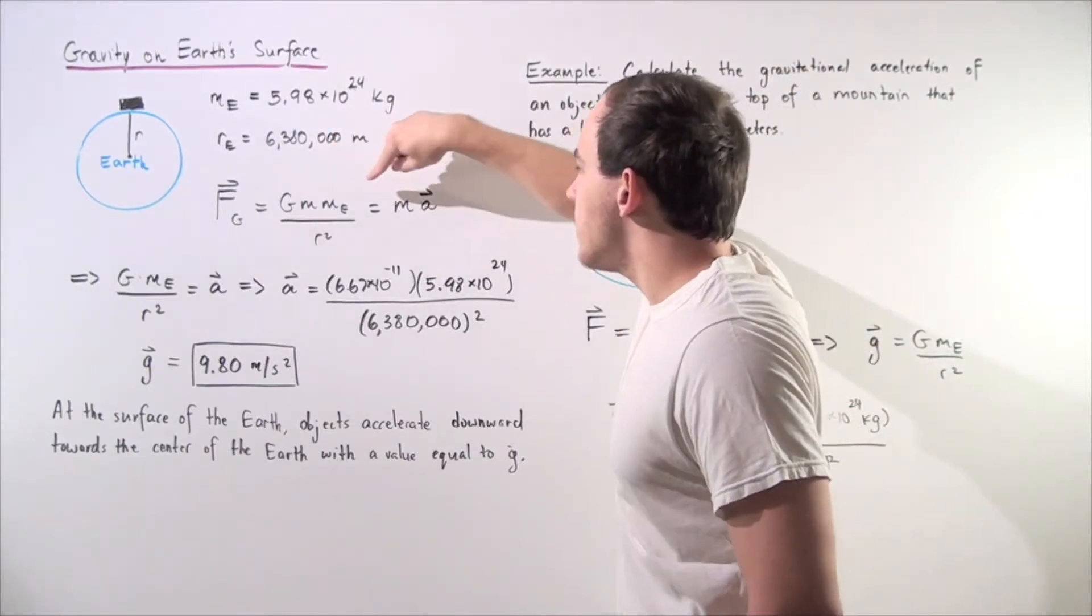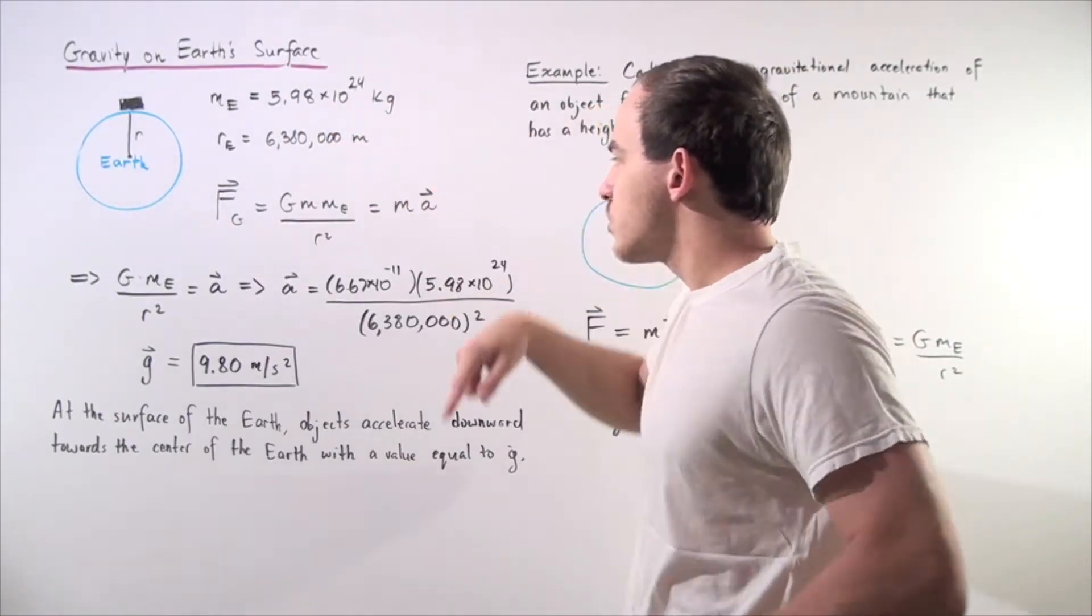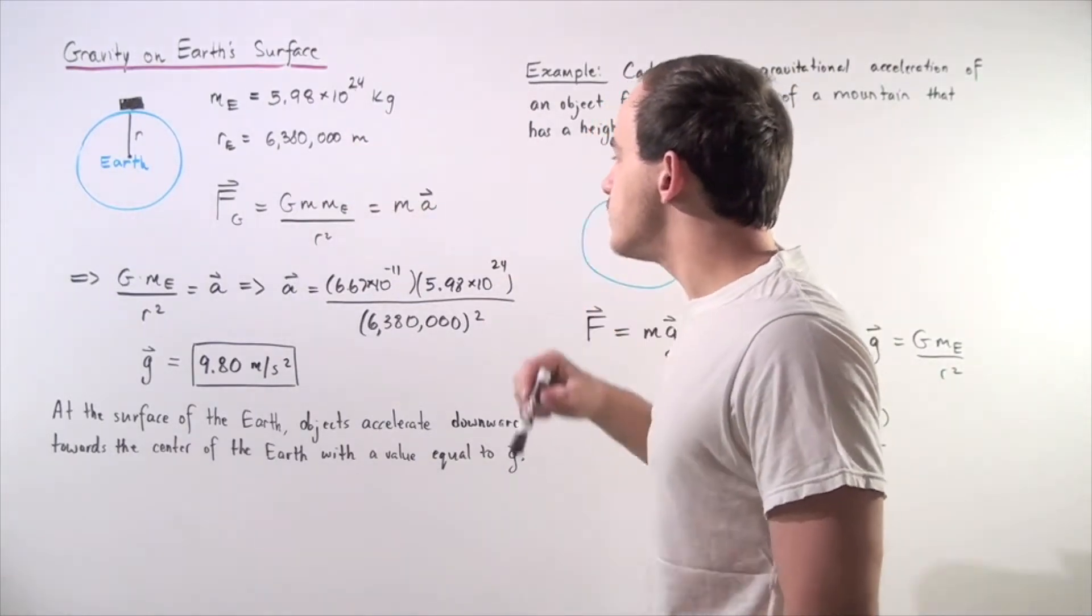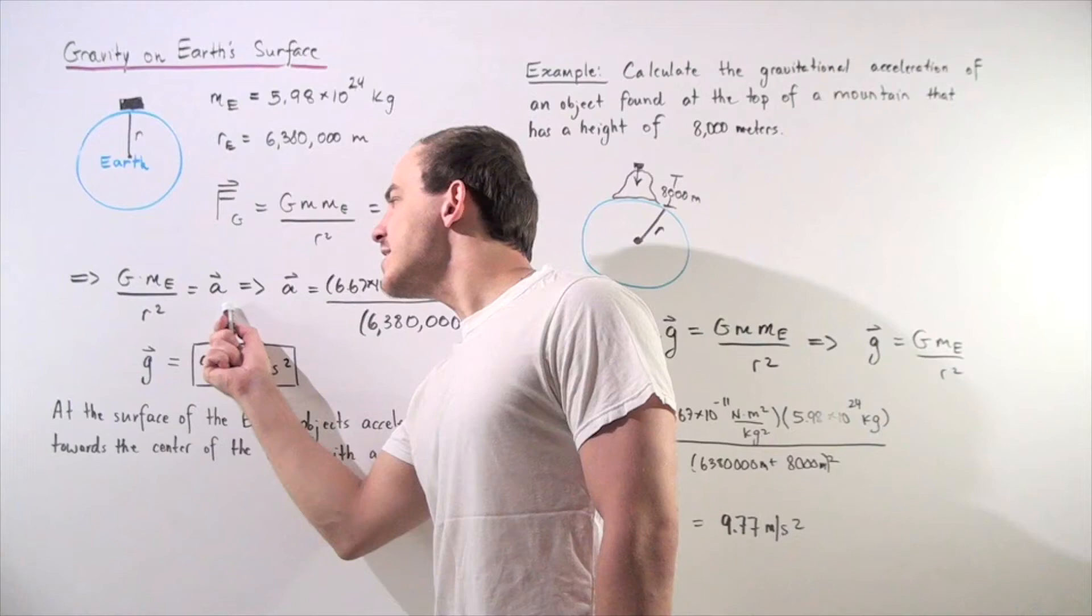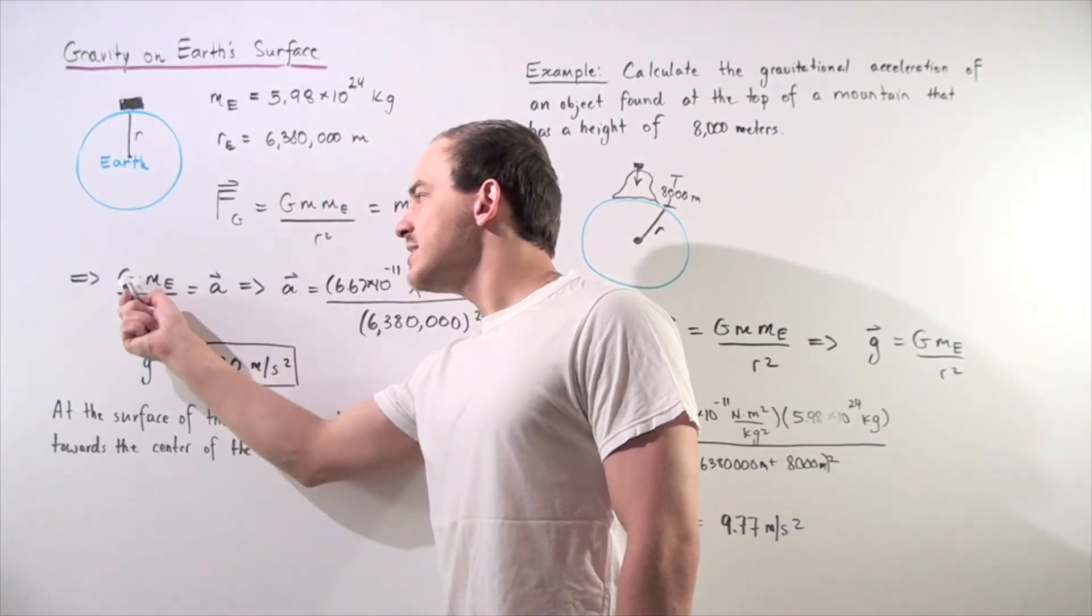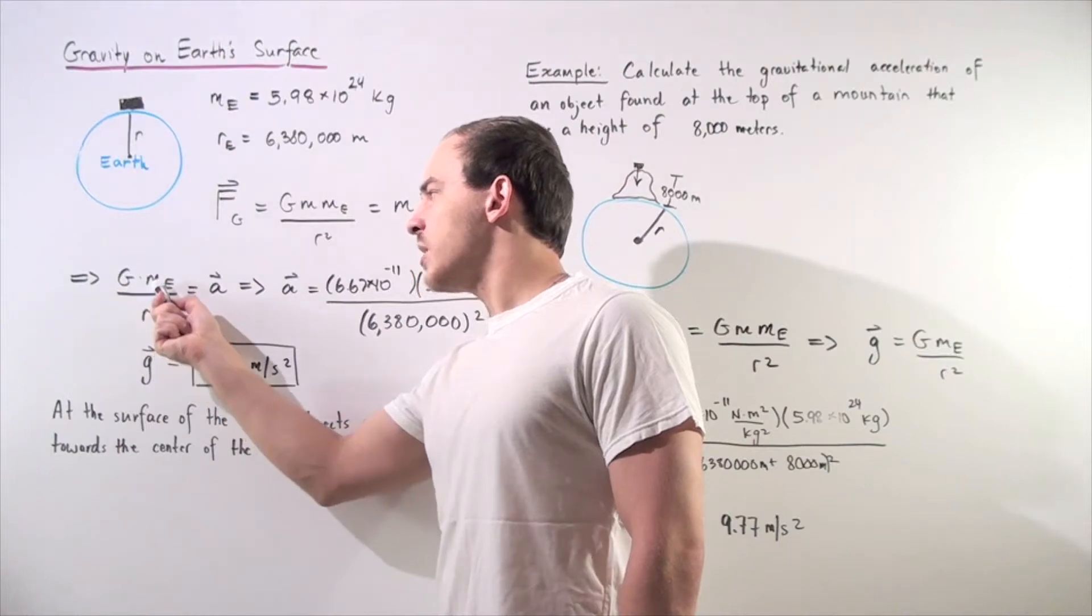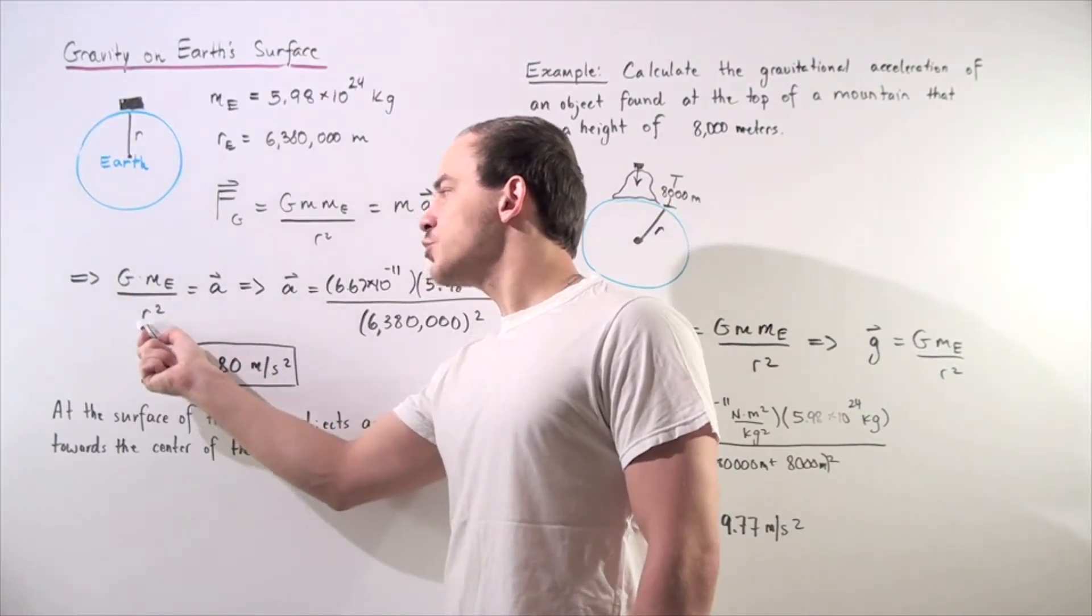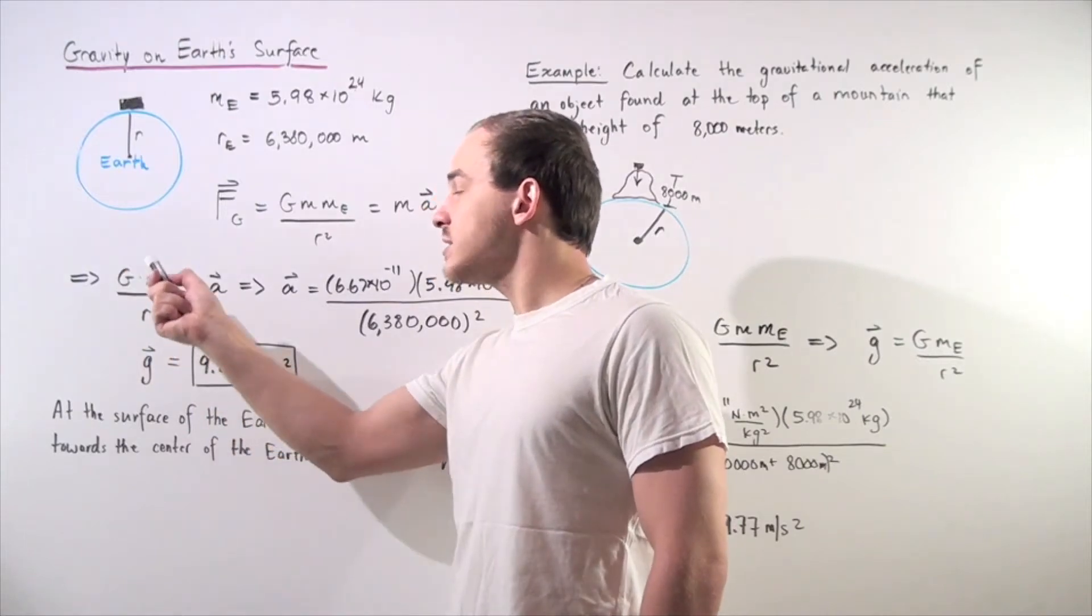Notice, the m's appear on both sides, so the mass of my object, the marker. So, I can cross out these m's, and I'm left with our acceleration at the surface of the Earth is equal to the gravitational constant g multiplied by the mass of the Earth, divided by the distance between them squared, so the radius of the Earth, squared.